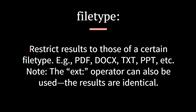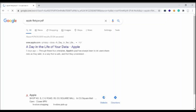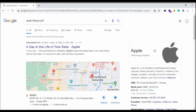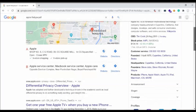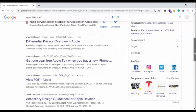Filetype: — used to restrict results to those of a certain file type, for example pdf, txt, ppt, etc. The ext operator can also be used. In this example, all the PDFs which contain "apple" will be fetched.